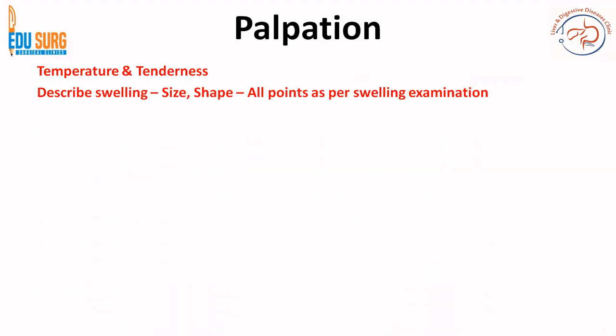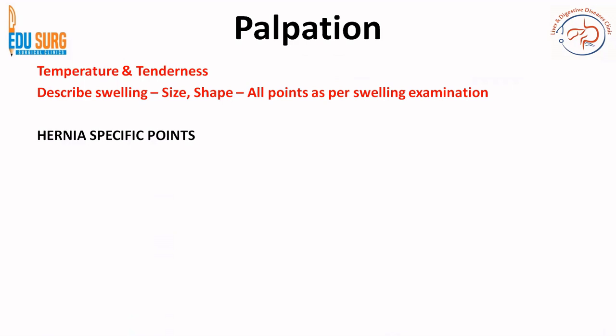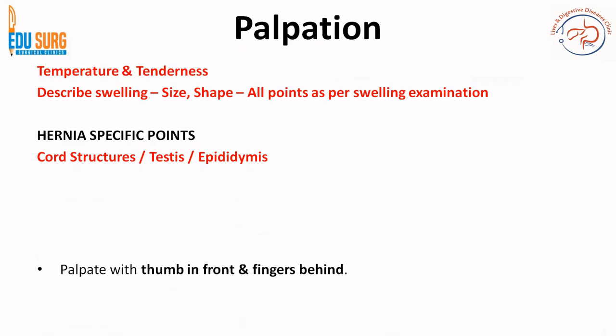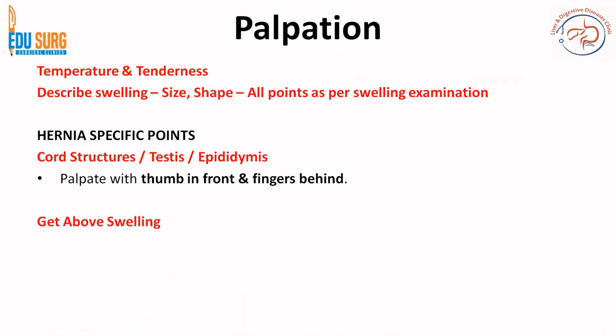In palpation, the first thing is to confirm your inspection findings. You palpate the swelling, looking for temperature and tenderness, and describe the swelling covering all points per swelling examination, then move to hernia-specific points. Palpate the cord structures, check for tenderness, and also the testes and epididymis. Palpate with thumb in front and fingers behind, and check for getting above the swelling. If it is a scrotal swelling, you can palpate the cord structures above the swelling, but in an inguinal or inguino-scrotal swelling you cannot get above the swelling.